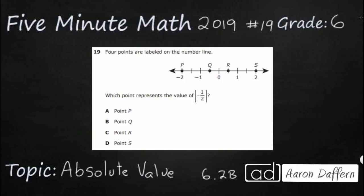This looks like a fairly simple problem. We have four points on a number line, and we need to find which point represents the absolute value of negative one-half.